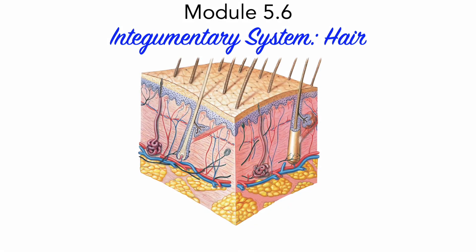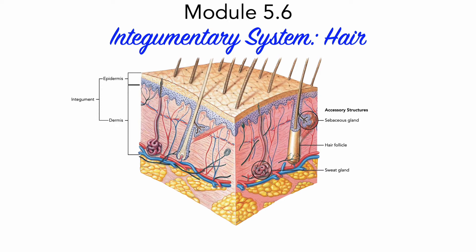Hair and several other structures — hair follicles, sebaceous and sweat glands, and nails — are considered accessory structures of the integument. These structures are produced from the epidermis during embryonic development. Hairs are non-living structures that are highly keratinized and produced in organs called hair follicles. Hairs are found in the integument on most surfaces of the body. We do not have hairs on the sides and soles of our feet, the palms of our hands, the sides of our fingers and toes, our lips, and portions of the external genital organs.